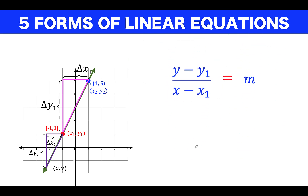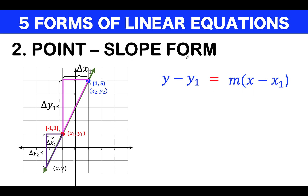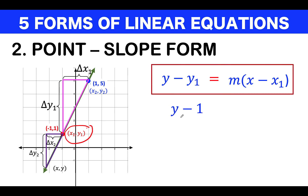The point-slope form is derived by substituting m for the right side of the two-point formula and clearing the fraction by multiplying both sides by (x − x₁), giving us: y − y₁ = m(x − x₁). Substituting y₁ = 1 and x₁ = −1, we get x minus negative 1 becomes x + 1, so the point-slope form of this line is y − 1 = 2(x + 1).